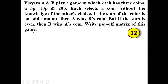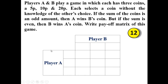So far we have discussed how to solve the payoff matrix when it was given directly, but in this problem we have to generate it. Player A has three courses of action: 5 paise, 10 paise, and 20 paise. Similarly, player B also has the same three courses of action: 5 paise, 10 paise, and 20 paise.